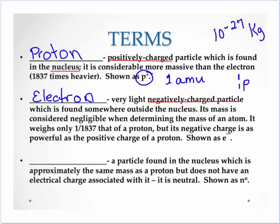Very light, one 1/1837th of a proton. So compared to one amu, we pretty much call it nothing. And we give it the symbol e negative, or sometimes you'll see the symbol e with a negative one charge and zero mass. So we put the charge in the bottom left and the mass in the top left.